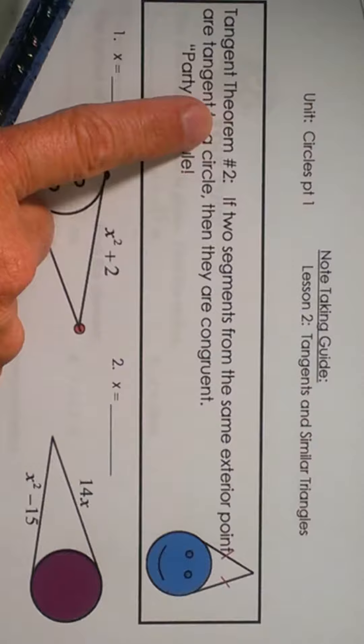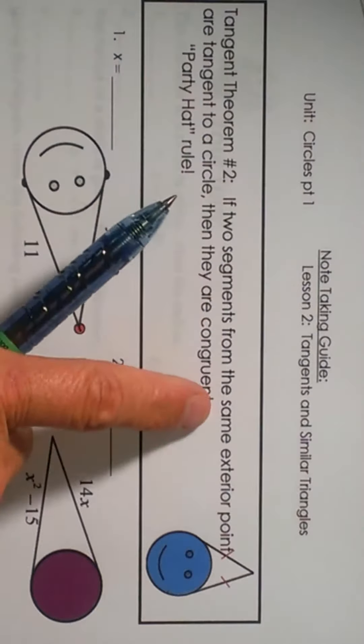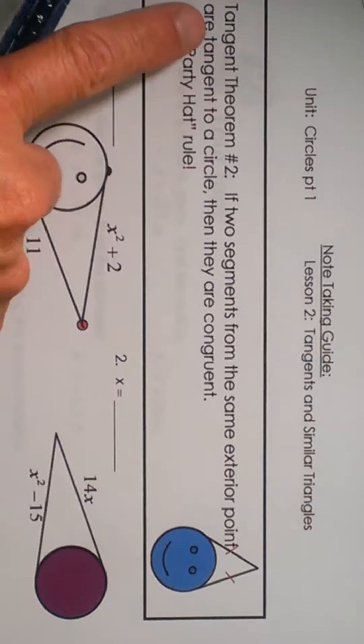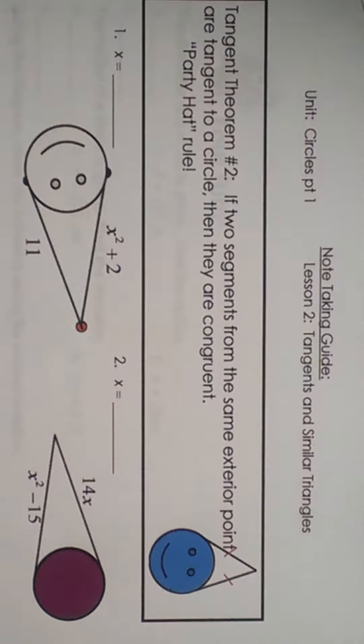We're looking at the Tangent Theorem number 2, and it says if two segments from the same exterior point are tangent to a circle, then they're congruent. So let's see what that means.